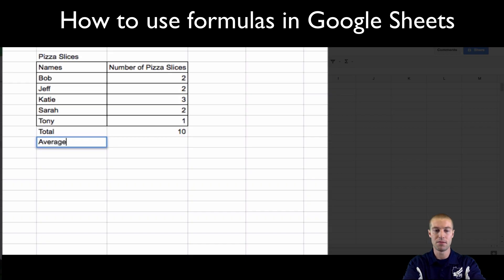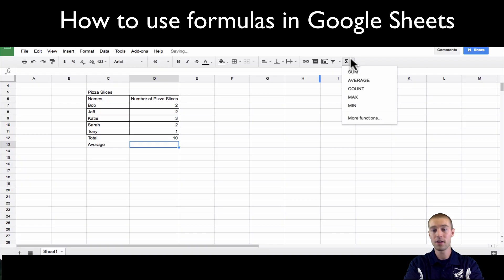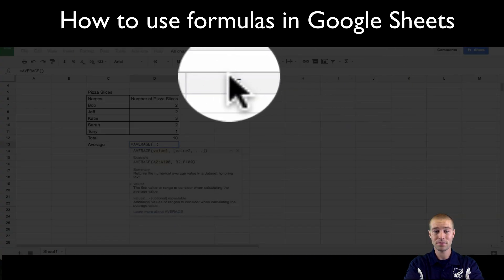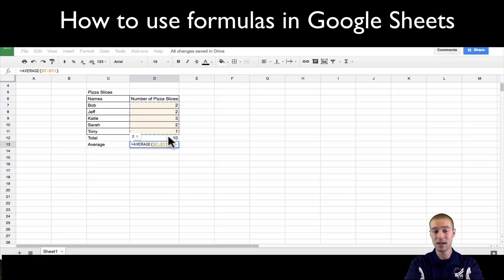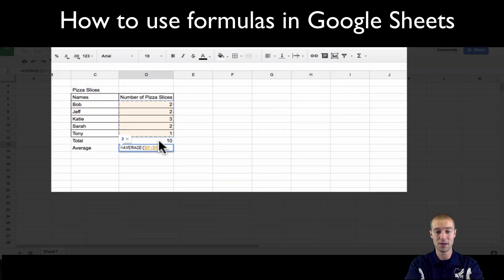Now let's say, well, on average, how many slices did each person eat? So we can go here, we can go to the average button, and we can highlight all of these. Remember, don't highlight the things outside of the box, so don't highlight the total, or we'll throw things off. So on average, people were eating two slices of pizza each.